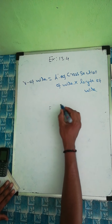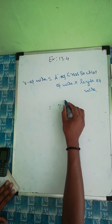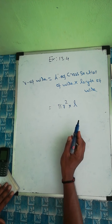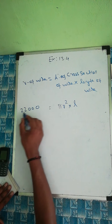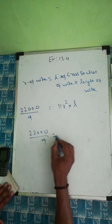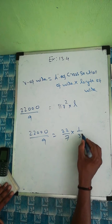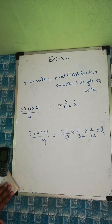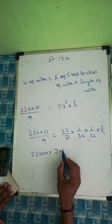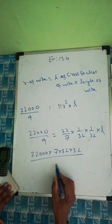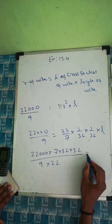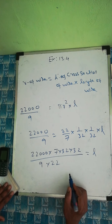So we have: 22000/9 = π × (1/32)² × l. That is: 22000/9 = (22/7) × (1/32) × (1/32) × l. Rearranging: l = 22000/9 × 7 × 32 × 32 / 22.